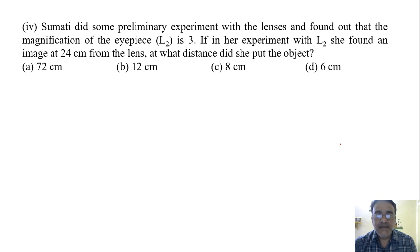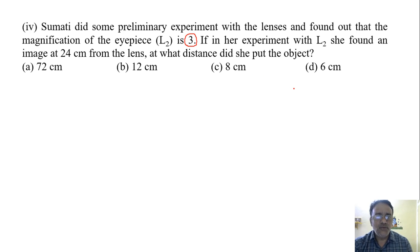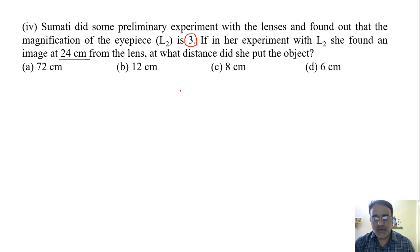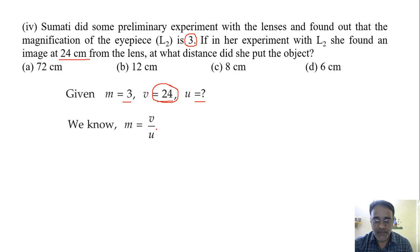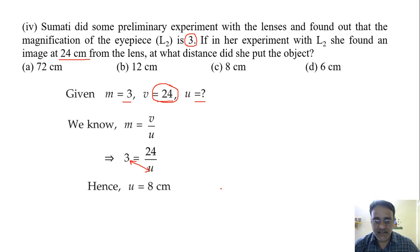The fourth question: Sumati found that the magnification of the eyepiece is 3. In her experiment with lens L2, she found an image at 24 cm from the lens. At what distance did she put the object? Here v = 24 cm, m = 3, and we need to find u. Using m = v/u: 3 = 24/u, so u = 24/3 = 8 cm.